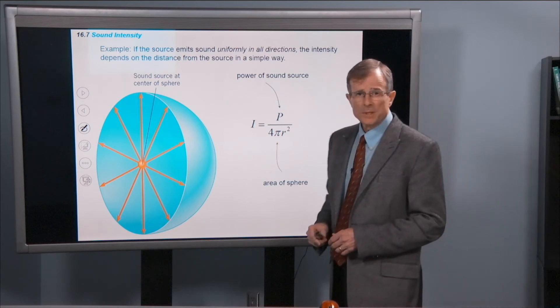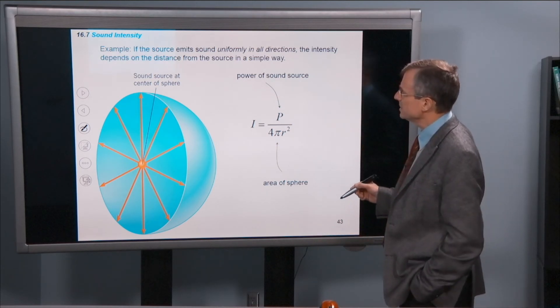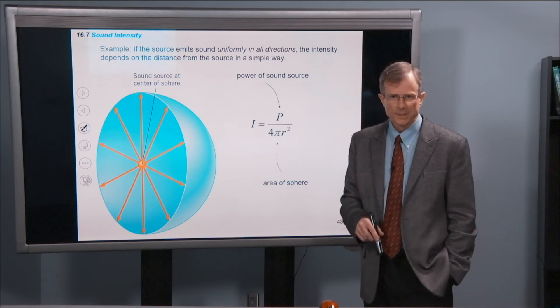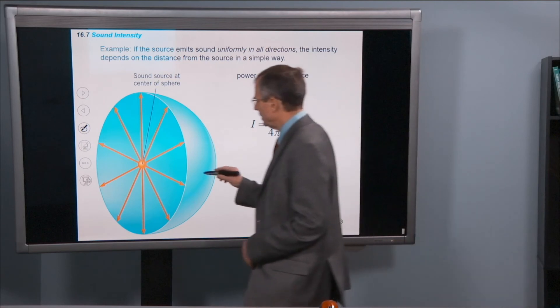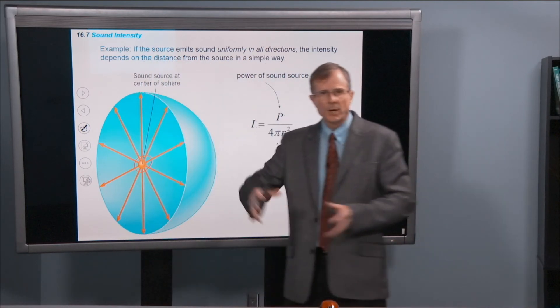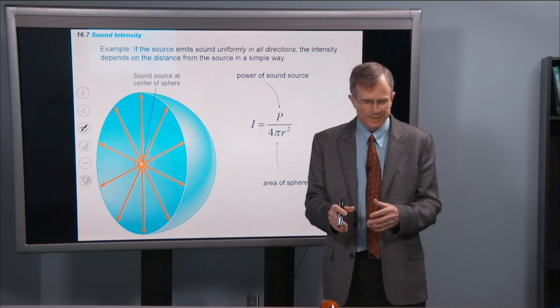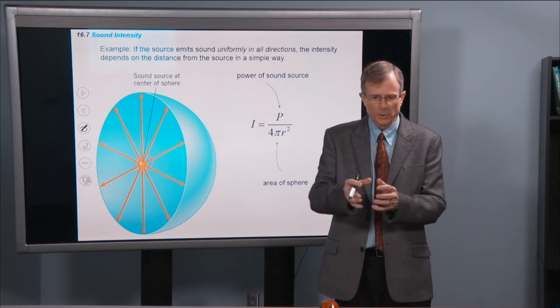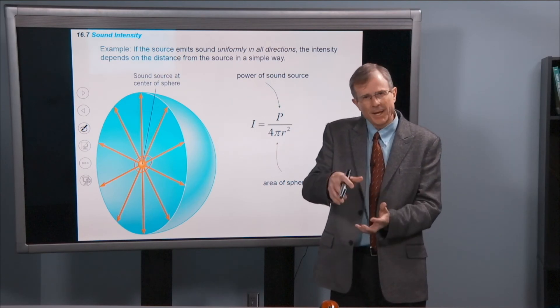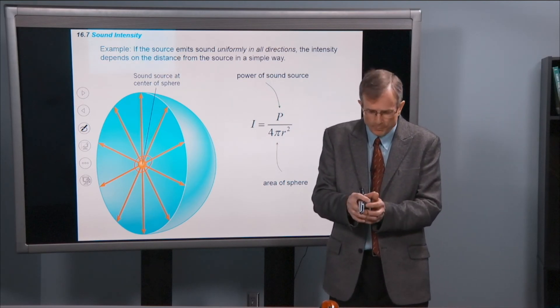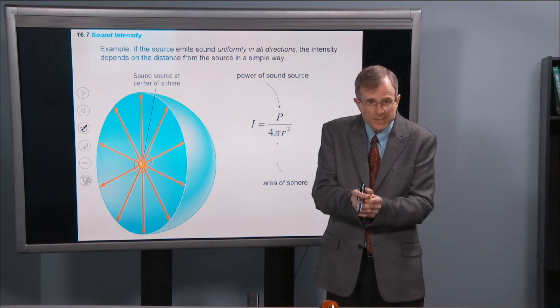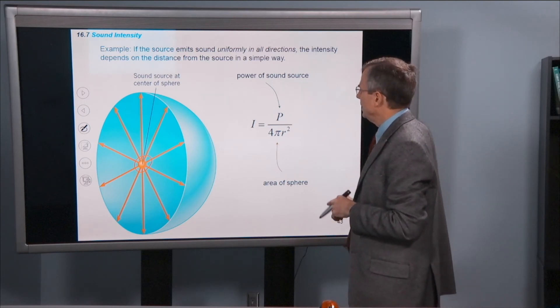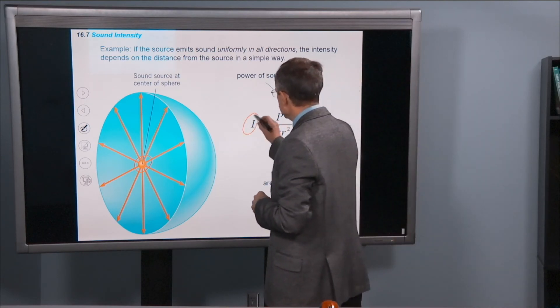Now, if a source emits sound uniformly in all directions, then the intensity will depend on the distance from the source in a very simple way. So what we're thinking about here is a source of sound that propagates in all directions. The simplest case would be a sphere that's pulsing. So it's going out in all directions and it's going to act like a speaker that compresses the air and then rarefies the air and sends those waves out in all directions. If that's true, then the intensity is a simple relationship.